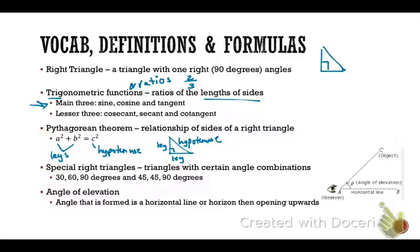The next definition to get down is special right triangles. These are right triangles that have angle combinations that are common. One combination is 30-60-90, and the next is 45-45-90. The last definition is angle of elevation. An angle of elevation is an angle that is formed with a horizontal line or the horizon and opens upward. You can see the horizontal line, the angle, and that it is formed by moving upward from that baseline — so it's an angle formed as you look upward.